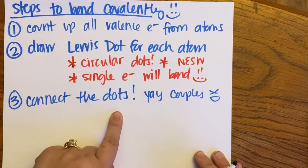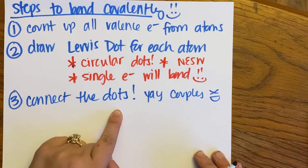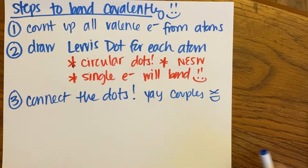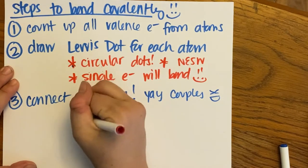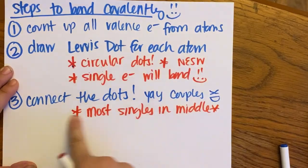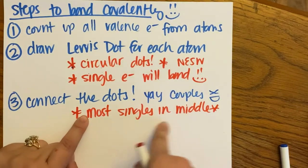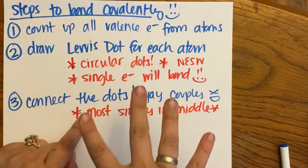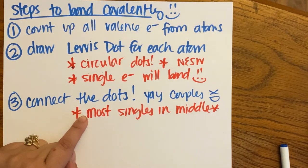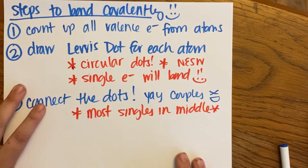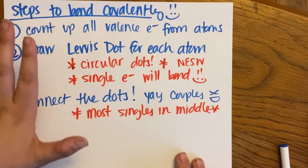Step three: connect your dots — connect the singles. You're going to show that you are sharing electrons by connecting the dots. A tip here: put the atom with the most singles in the middle. The atom that has the most singles is going to make the most bonds, so put him in the middle and bond everything else to him.